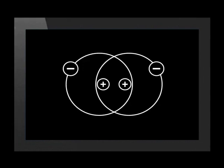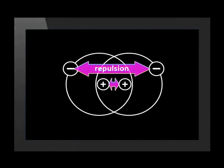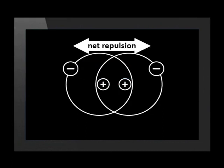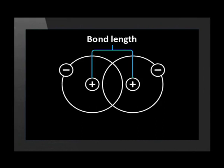But if the atoms get closer together than their bond length, they repel one another more strongly than they attract one another. So there is a net repulsion which tends to accelerate them apart. This is why the two hydrogen atoms tend to settle together at their bond length.